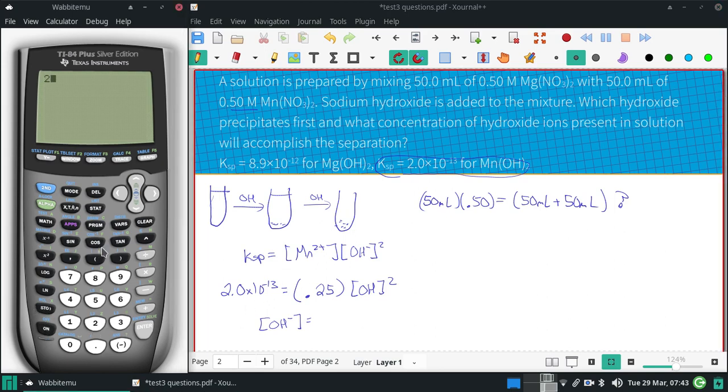So 2 times 10 to the negative 13, divided by 0.25, and then we need to square root of that. And I get the OH concentration needs to be at least 8.9 times 10 to the negative 7.